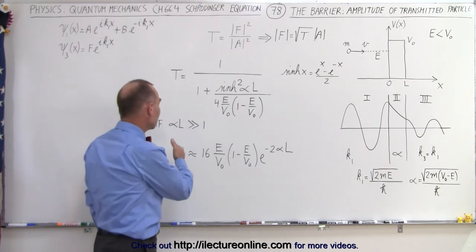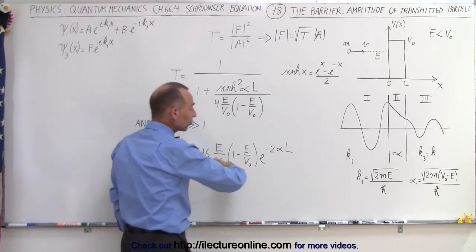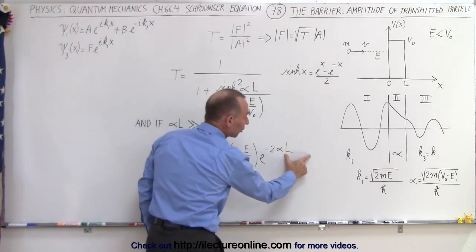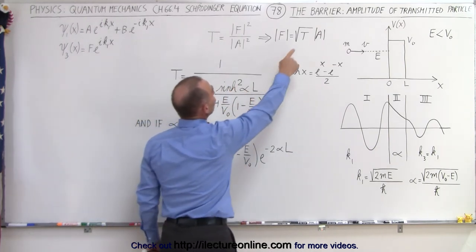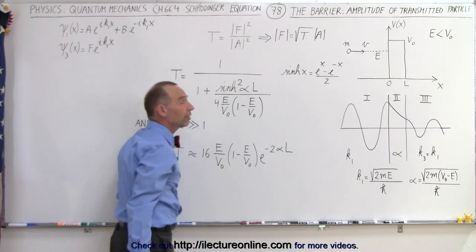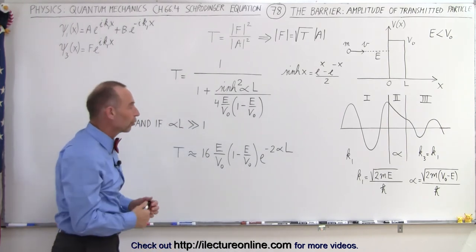Notice that the transmission coefficient decays exponentially as L becomes larger and larger. A smaller transmission coefficient simply means a smaller amplitude on the other side of the barrier, which of course makes sense.